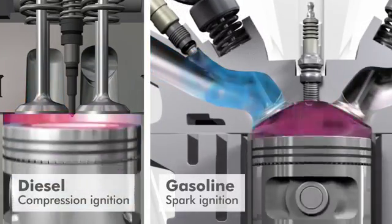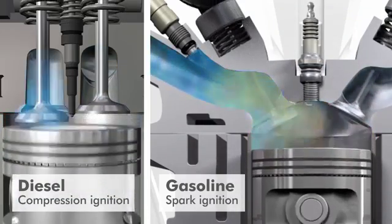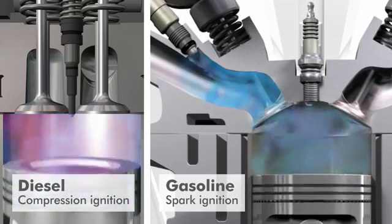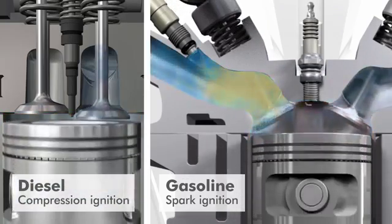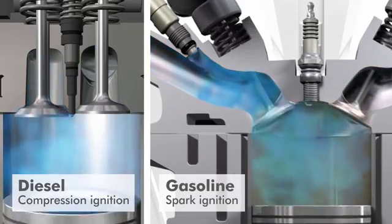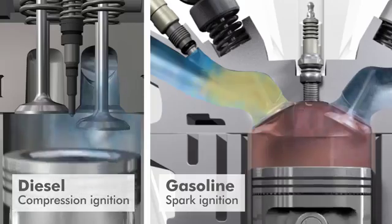In conventional gasoline engines, a mixture of fuel and air is drawn into the cylinder, compressed by the motion of the piston and ignited by a spark as the piston nears the top of the cylinder. The resulting combustion generates pressure which forces the piston down to power the vehicle.